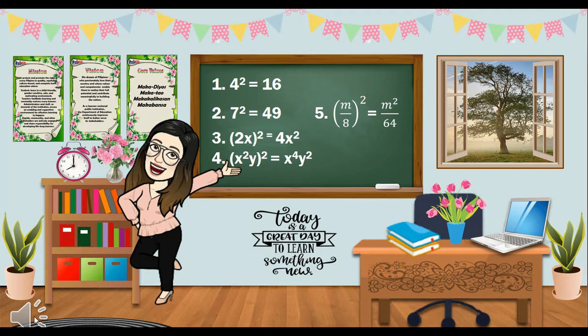Now, these quantities from which we obtained our perfect squares are called square roots. The square root of 16 is 4. The square root of 49 is 7. The square root of 4x squared is 2x, and so on and so forth.